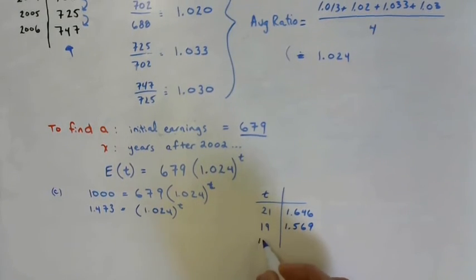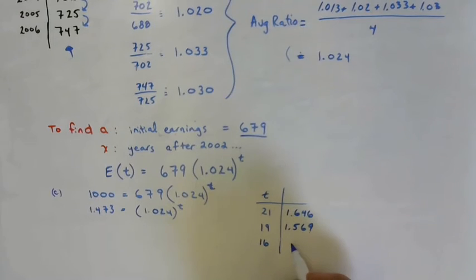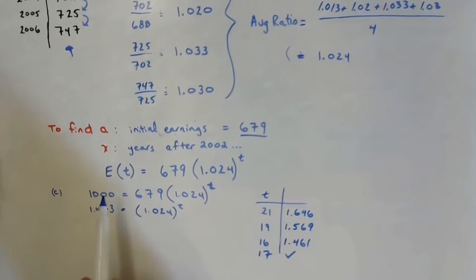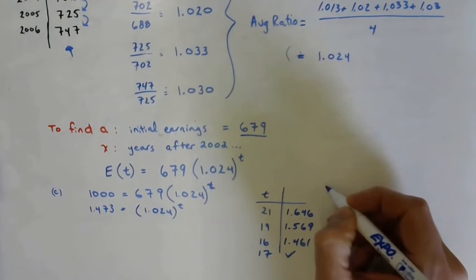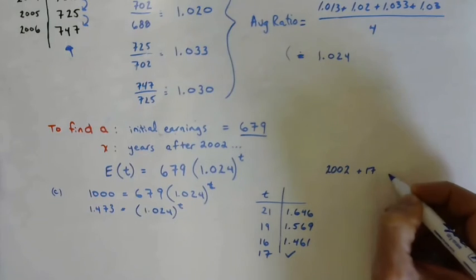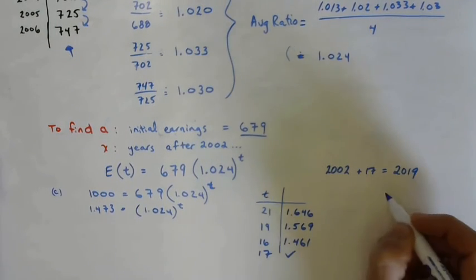I did 18. I would do 20. 1.532. Still too high. Let's try 16. 1.461. So that probably means that 17 would be good because we want to get over this, right? We want to get over a thousand dollars. So in the 17th year after 2002, this model predicts that the average earnings per week for a Canadian will be over a thousand dollars. So if we take what we found out, it's T years from 2002. So you got 2002 plus 17 years. So in 2019, we should have cracked a thousand dollars per week. That's correct.